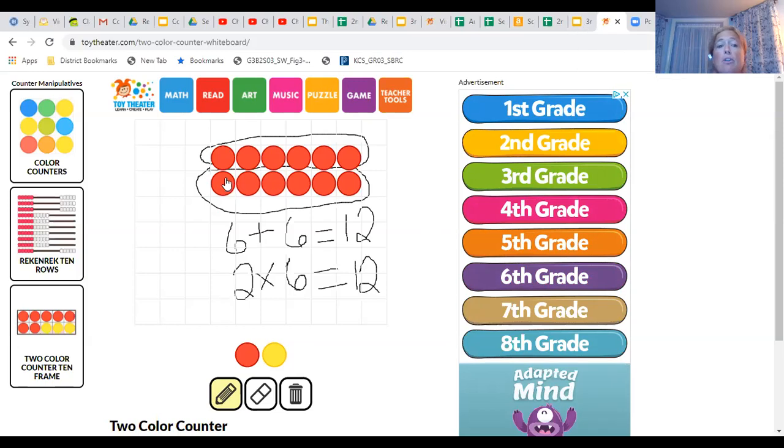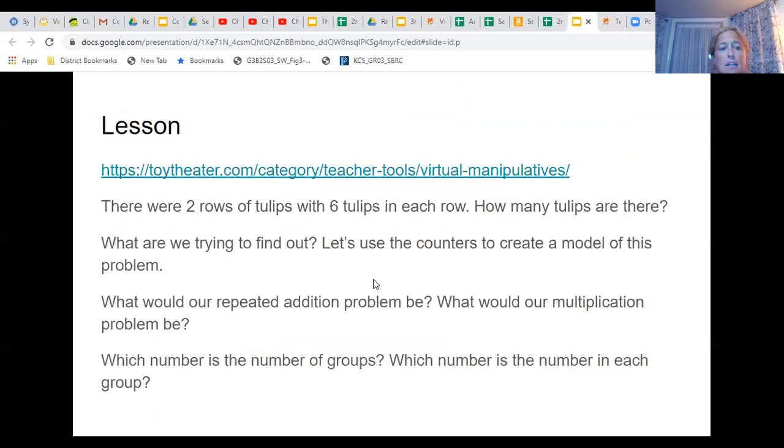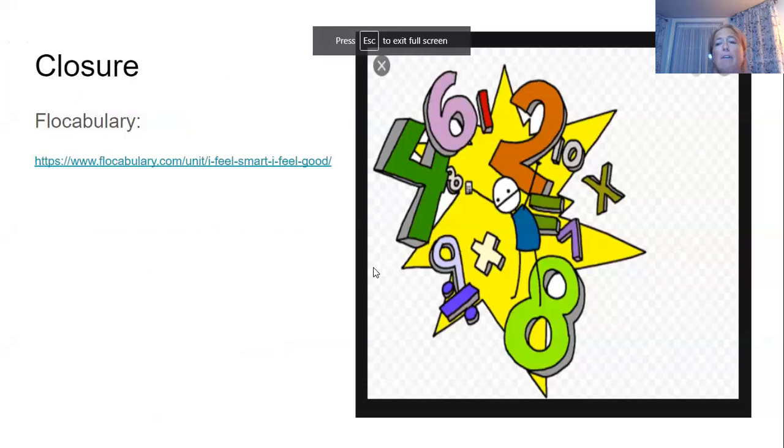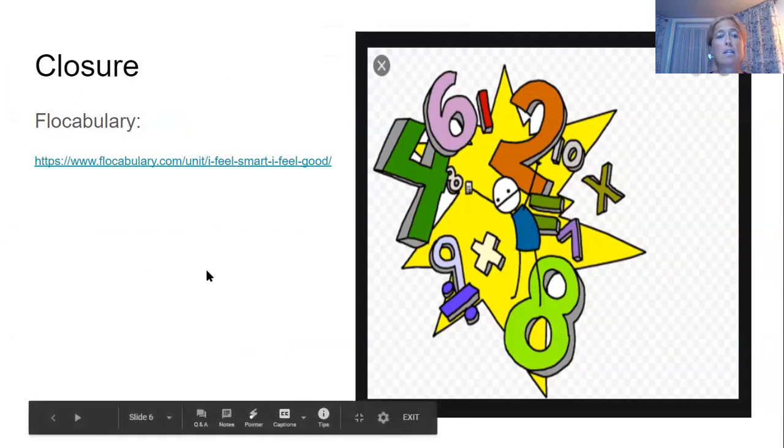Please remember that your number of groups comes first in your multiplication problem. That's the rows, then the number in each group, which is the columns. Some of you are turning that around. We need to make sure we have number of groups times the number in each group. All right, so before we finish, I do want to start showing you videos about multiplication facts. This first one is all about a number times one.